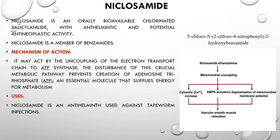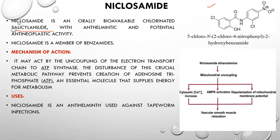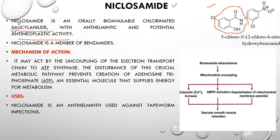Now let's discuss niclosamide. Niclosamide is an orally bioavailable chlorinated salicylanilide with anthelmintic and potential antineoplastic (anti-cancer) activity. Its chemical name is 5-chloro-N-(2-chloro-4-nitrophenyl)-2-hydroxybenzamide. It belongs to the benzamide category.